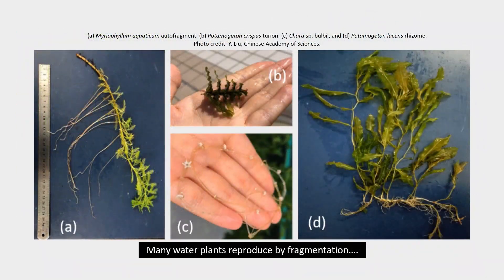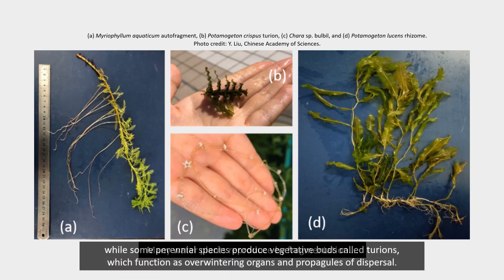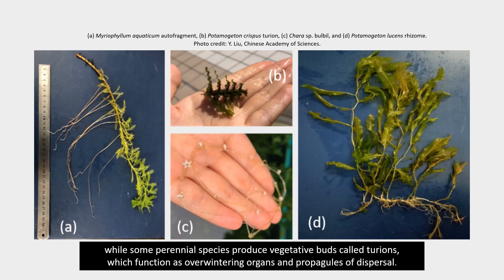Many water plants reproduce by fragmentation, while some perennial species produce vegetative buds called turians, which function as overwintering organs and propagules of dispersal.